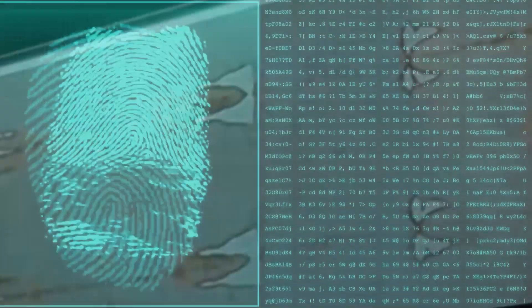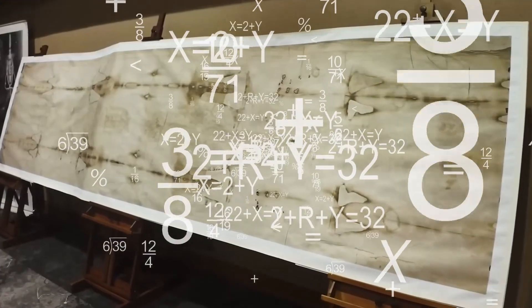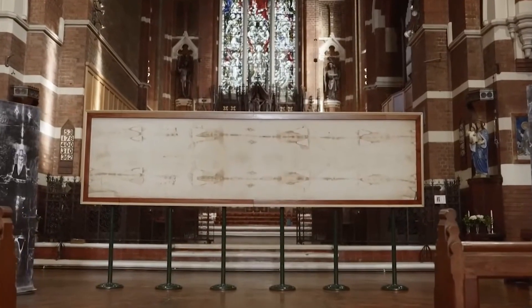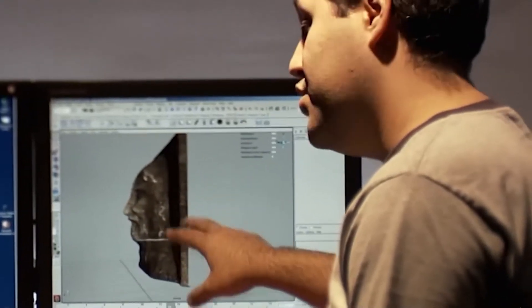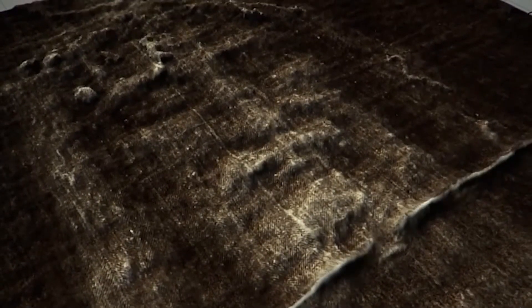This wasn't a slow-baking scorch from a hot statue. This was an explosion of light, a quantum flash that imprinted the man's form onto the cloth. The AI found that the hidden geometric pattern is the fingerprint of this event. It's the residual data signature, the mathematical echo left behind by this impossible burst of energy. This is why the image is a perfect negative. This is why it has 3D information. The image isn't a picture of a man. It's a projection. It's a holographic record of an event that defies the laws of physics as we know them.